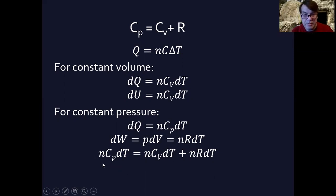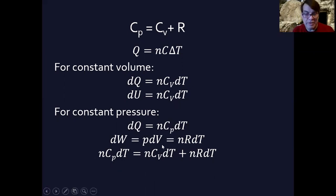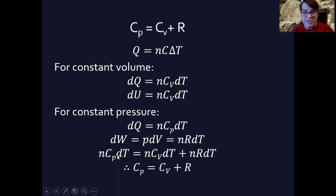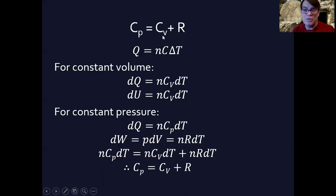For an ideal gas, internal energy u is directly proportional to temperature T regardless of what's happening. Substituting everything in — q = u + w — and noticing the common factors of n and dT throughout, if we divide all terms by n·dT we get: therefore Cp = Cv + R. That's the derivation. Again, you mainly just need to know this equation.